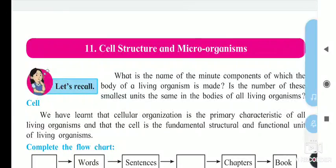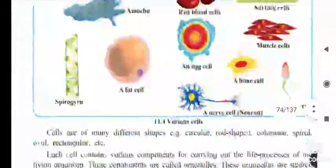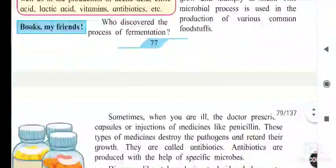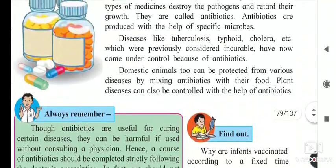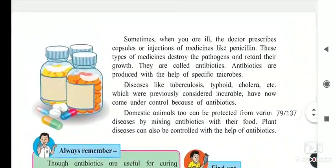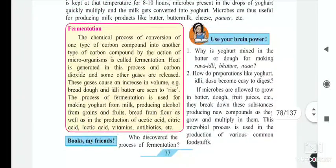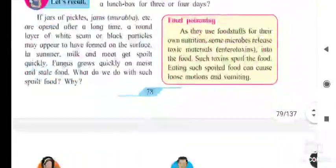Hello students, Lesson number 11: Cell Structure and Microorganisms. Under this lesson we will see the next part — the harmful bacteria. In yesterday's lecture we had seen the useful bacteria: azotobacter, some bacteria that cure tuberculosis, and rhizobium which is present in the root nodules.